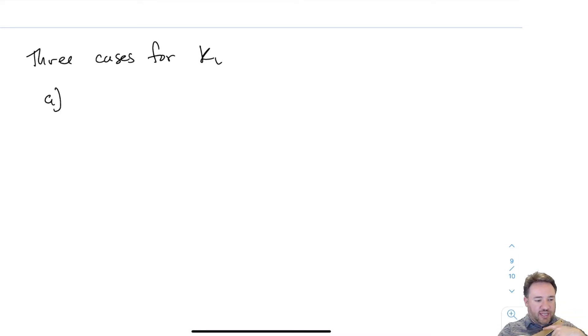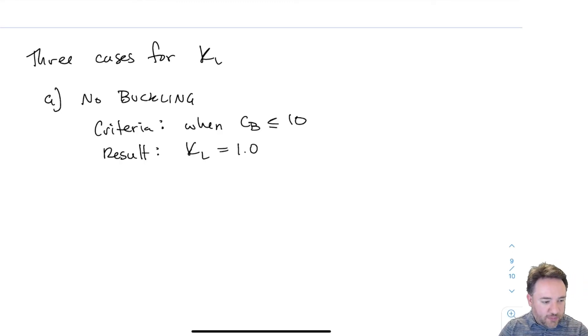The third regime is pure elastic lateral torsional buckling, like this ruler experiencing elastic buckling. It buckles, but nothing happens to the material. Everything remains elastic, so when I let go it comes back. Those cases get the highest reductions for KL, but without inelastic effects. So when the beam has low depth to width ratio and CB is less than 10, then KL equals 1, meaning no lateral torsional buckling.